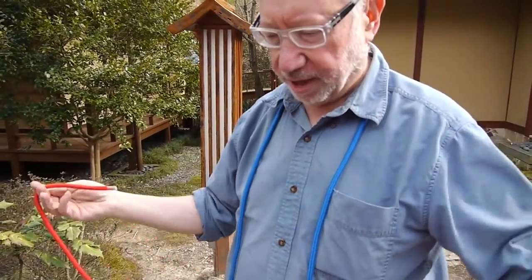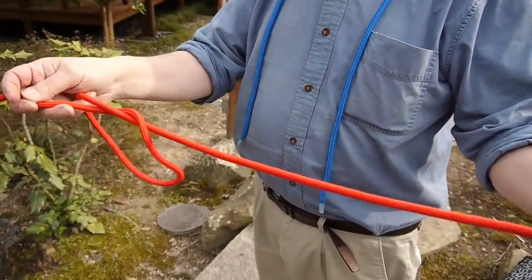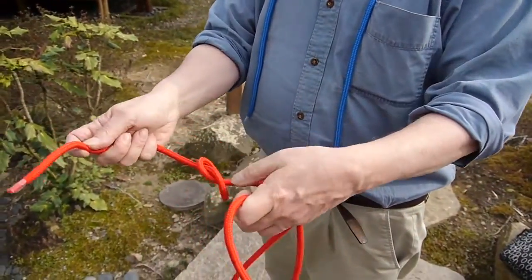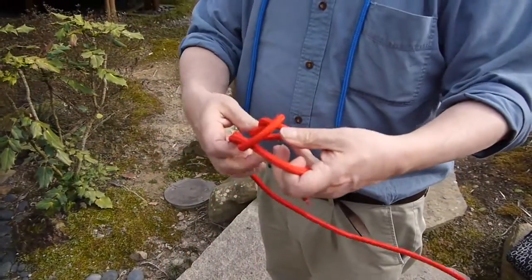Then there's the unknotting trick, where we made a loop, we made a trefoil knot, and then we made a square knot like that.